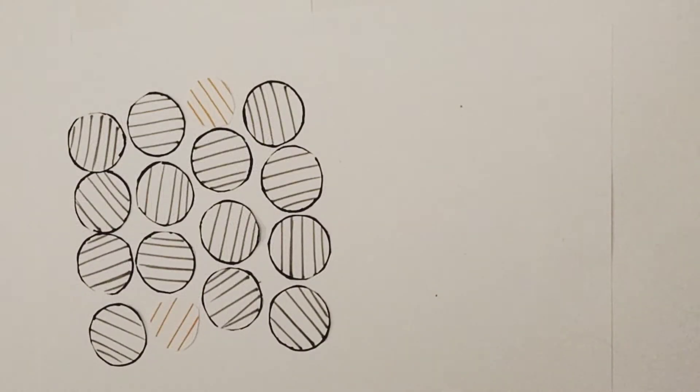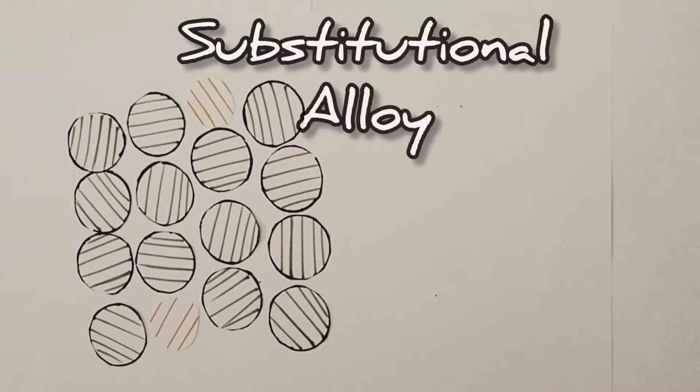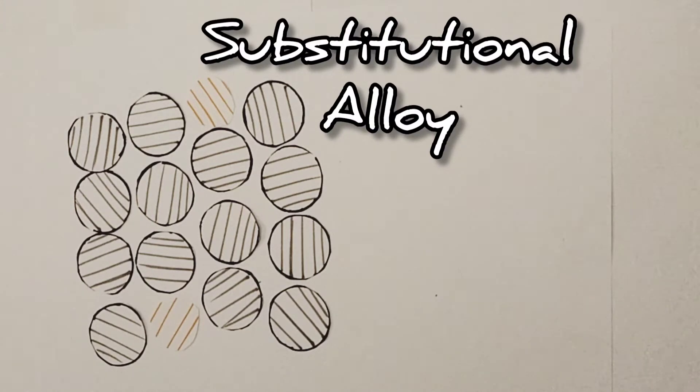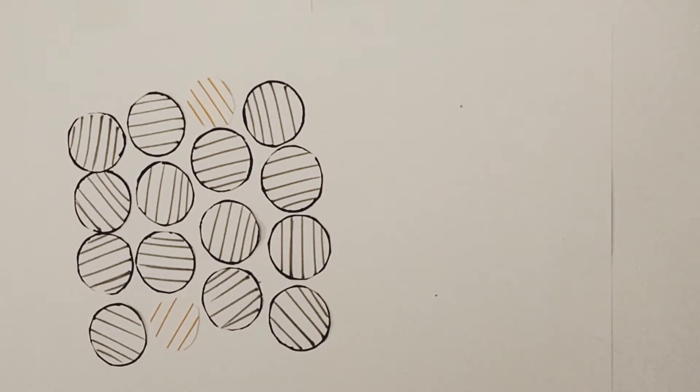The other type of alloy you may come across are known as substitutional alloys. These are alloys in which certain ions in the pure metal structure have been replaced by metal ions of a different element. In this case, my slightly more gold colored elements here and here.